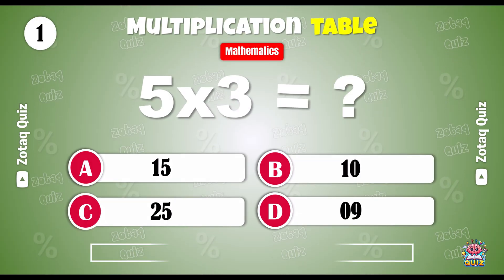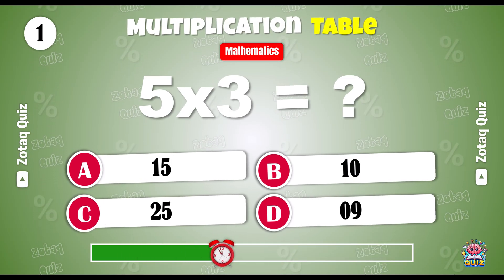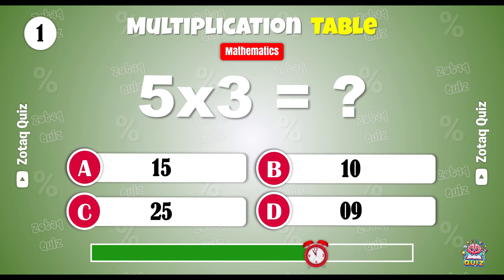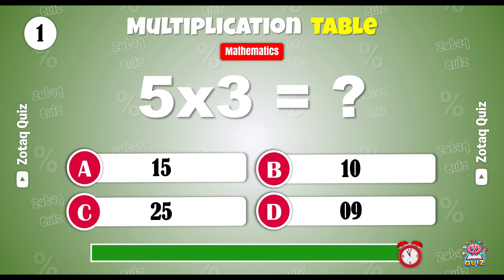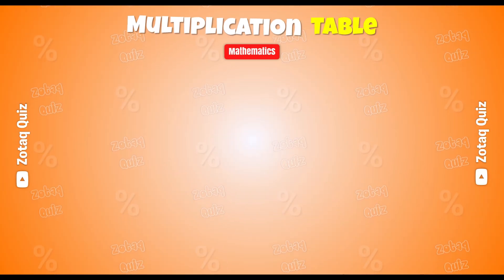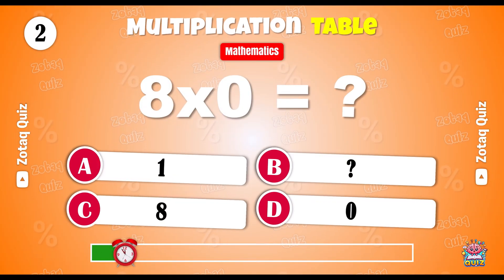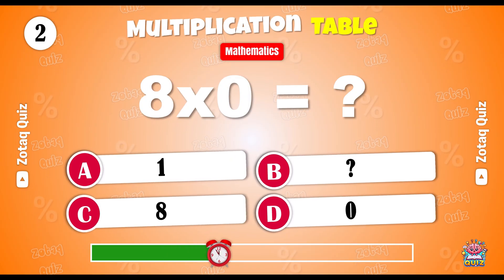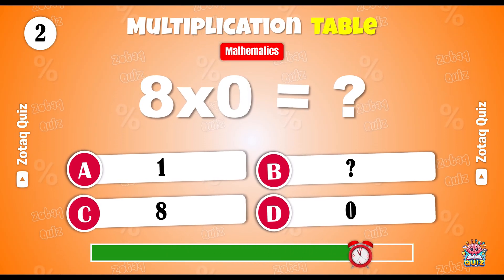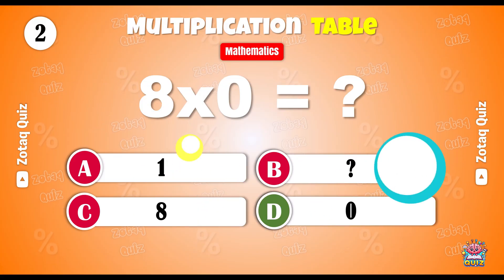Solve this. What is 5 x 3? And the right answer is 15. Here is your next question. 8 x 0. 0 is the right answer.